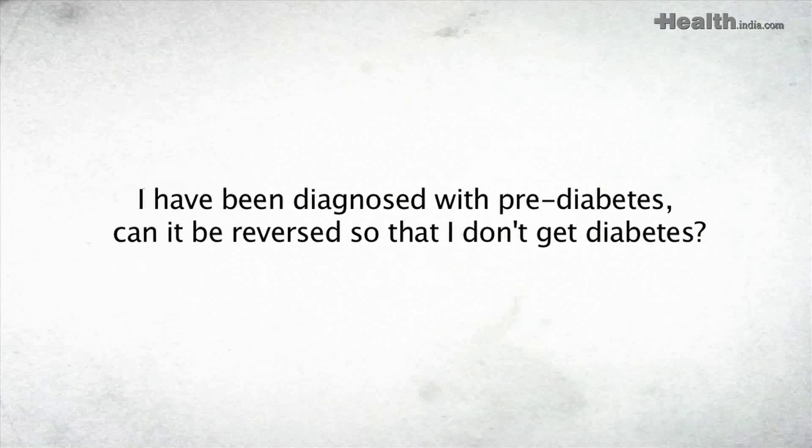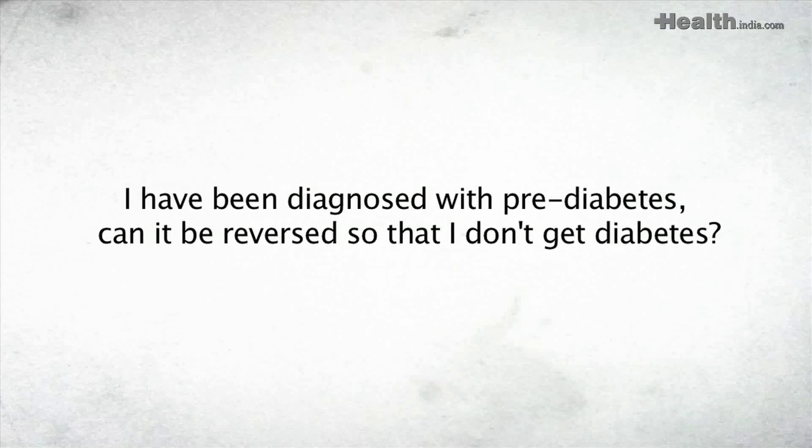I've been diagnosed with pre-diabetes — can it be reversed so that I don't get diabetes? That's a very good question. Pre-diabetes is where your sugars are higher than normal and you have not reached the phase of being called a diabetic. Every person who is prone to get diabetes goes through a transition from normal glucose tolerance to impaired glucose tolerance, which is called pre-diabetes, and then to diabetes.